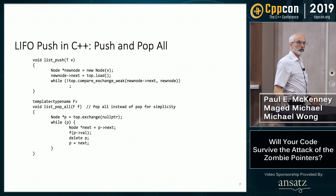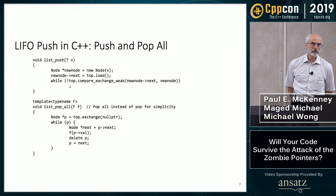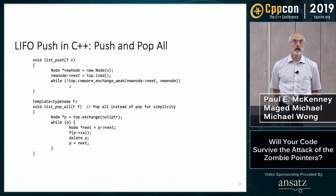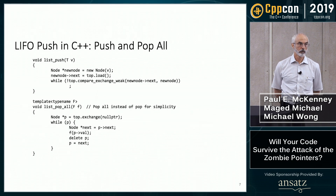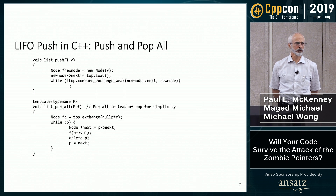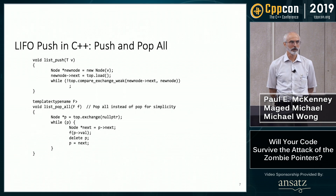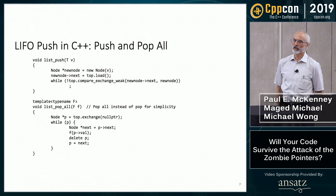The question about memory orders: the original thing would have been TSO plus multi-copy atomic, which is what the 370 was — a little bit stronger than x86. Although I'm not sure how many use cases there are for multi-copy atomic where x86 would give you the wrong answer.